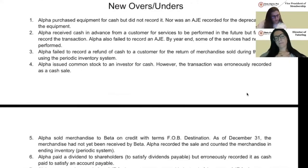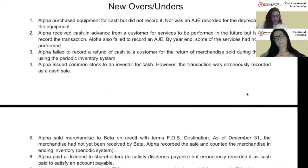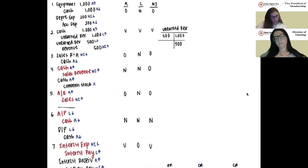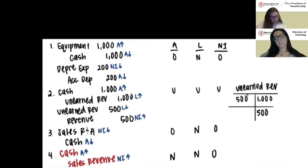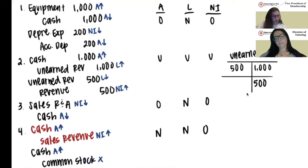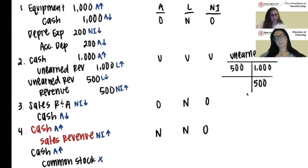Number one: Alpha purchased equipment for cash but did not record it, nor was an adjusting journal entry recorded for the depreciation on the equipment. They should have debited equipment and credited cash for when they bought the equipment. They also should have recorded a depreciation expense and recorded accumulated depreciation.